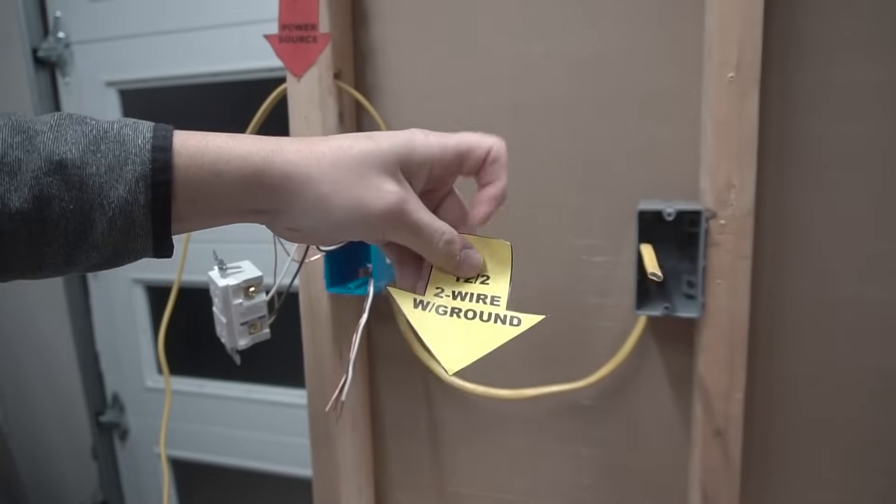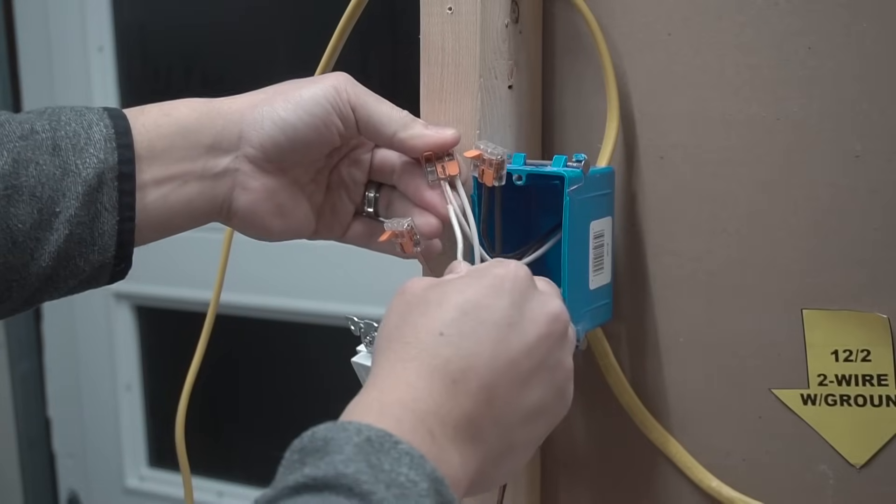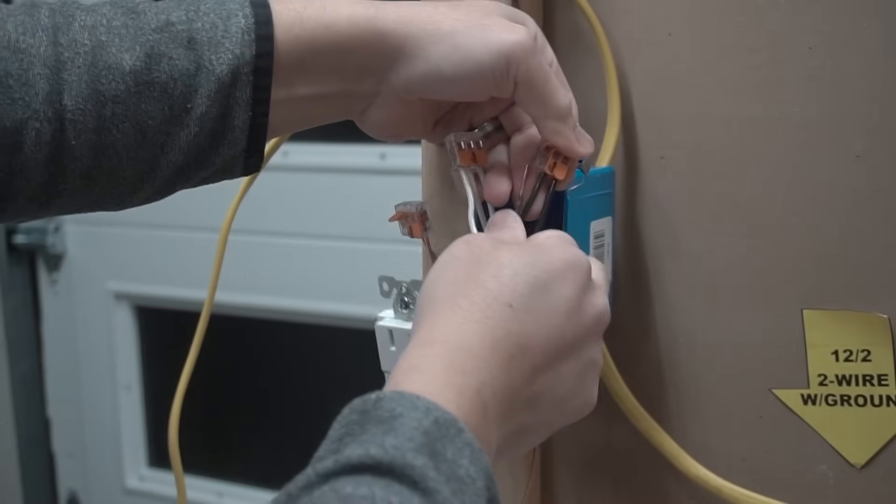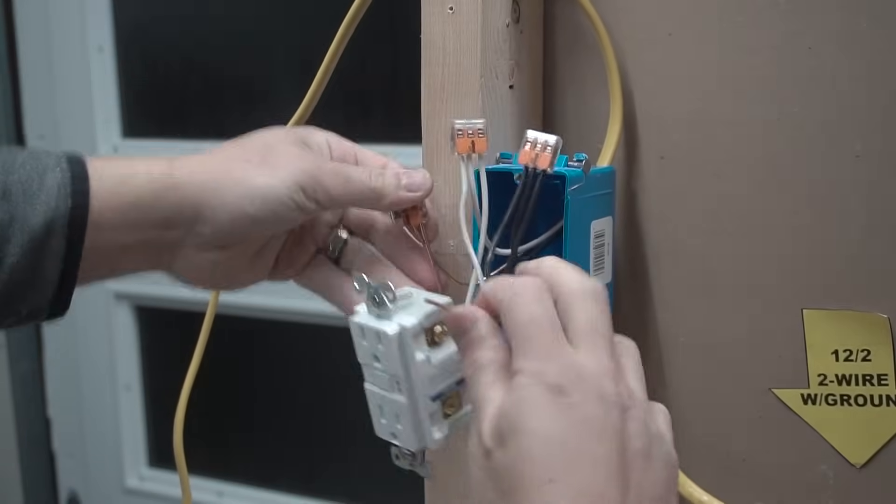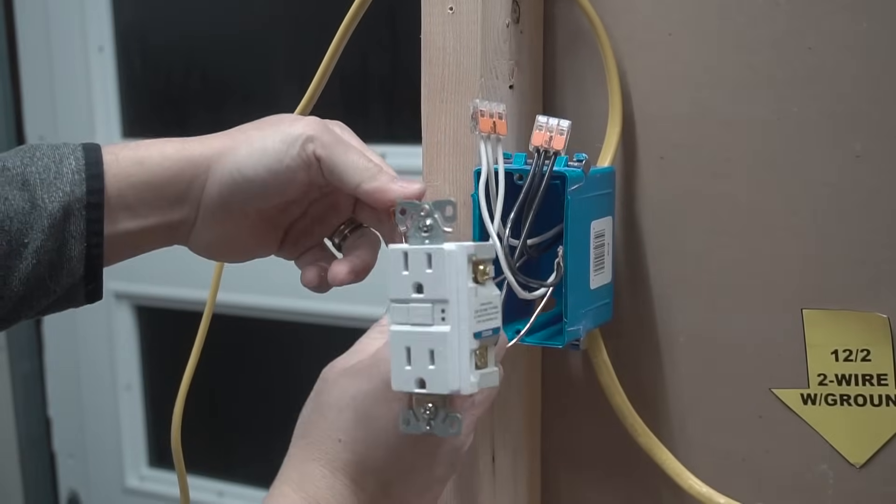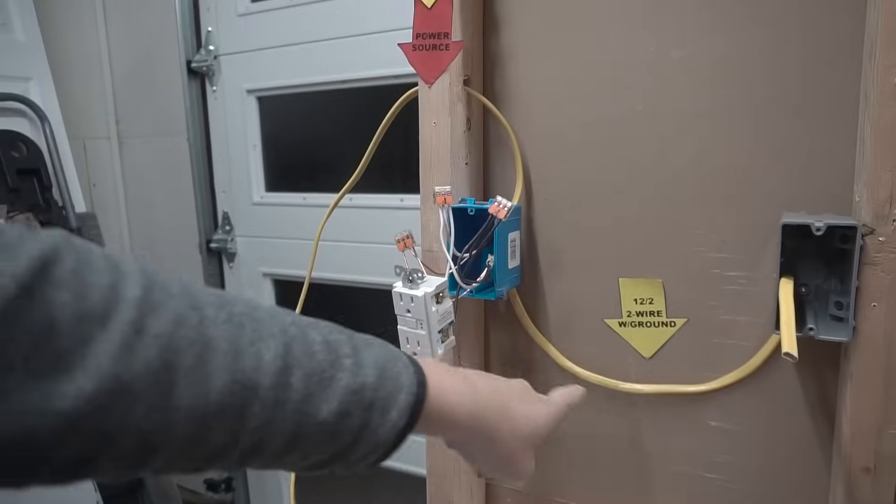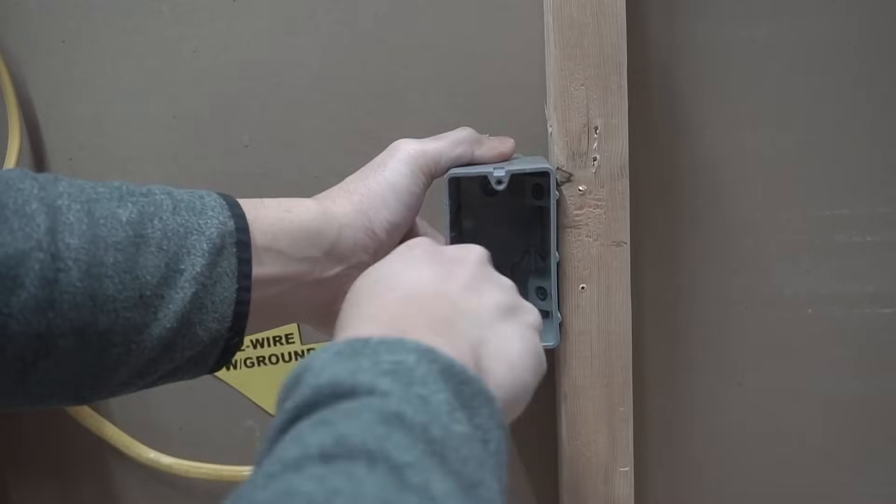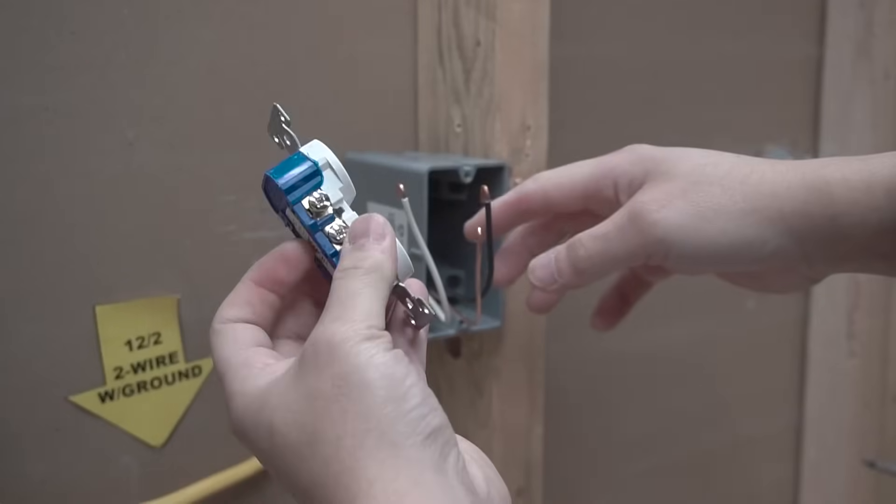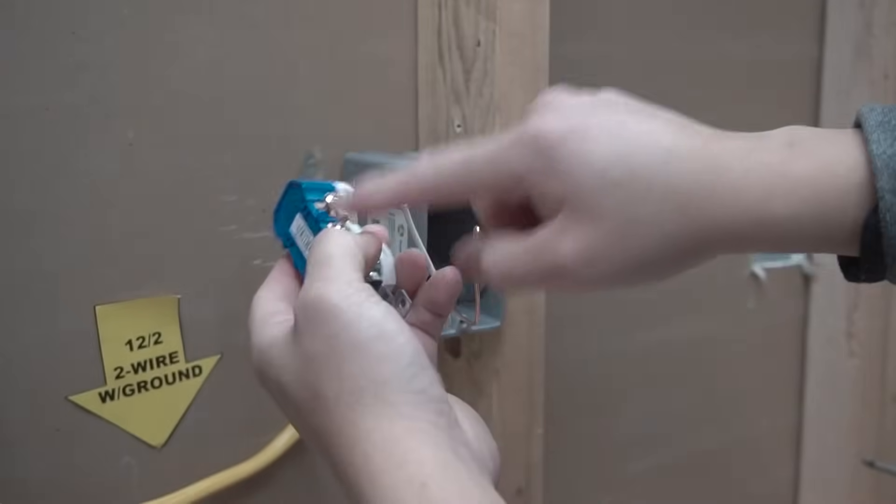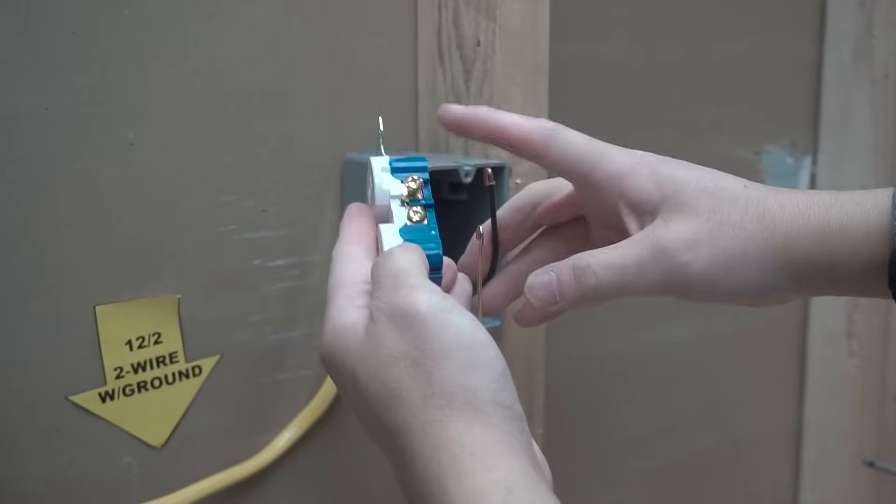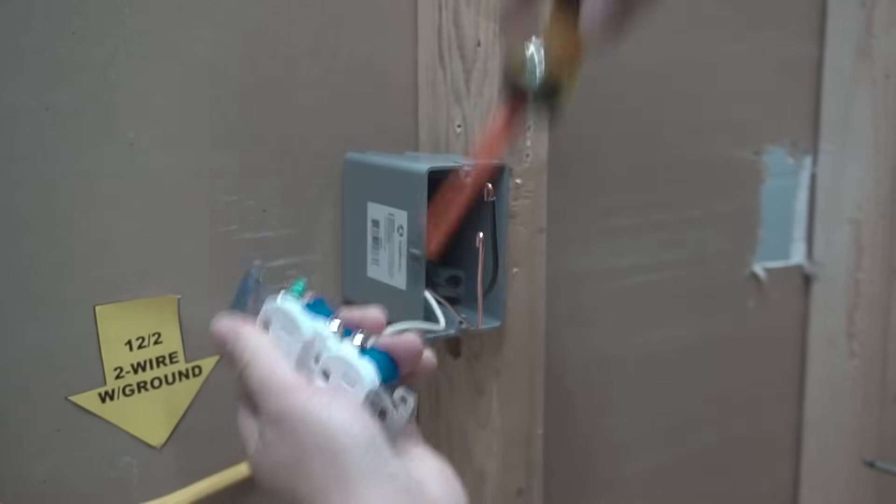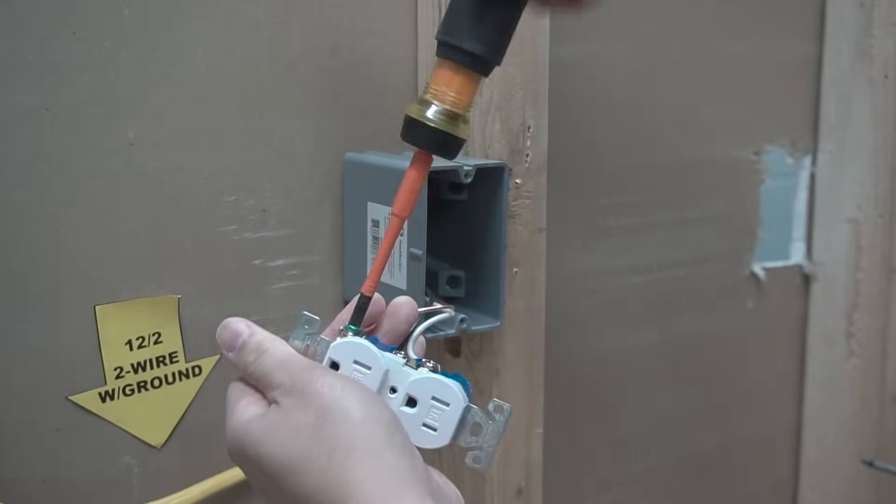So we're now going to label this one 12-2 wire with ground. Connect the neutral to the neutral. Connect the hot to the hot. Finish off the last for the ground. We're going to follow this 12-2, and now we're going to strip this one. Going to take our outlet or receptacle, and we're going to just put the neutral on the silver and the hot on the brass. We're going to do it on the clockwise position. And that's it.